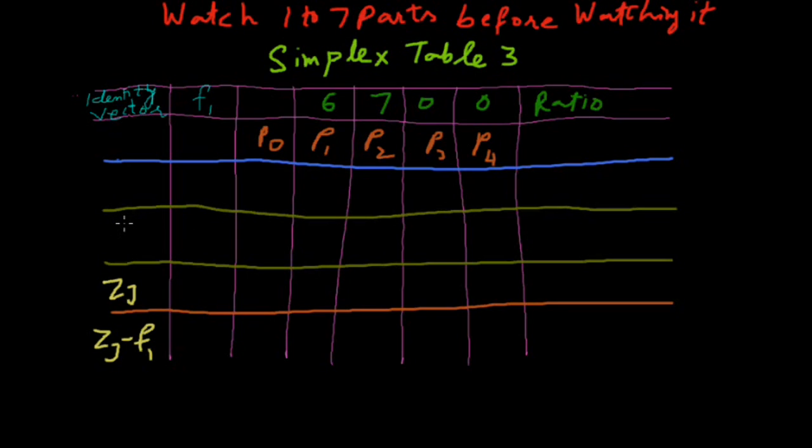Right here, P1 and its value is 6 as the objective function. And P2 will be the same because this is not our corresponding column in simplex table 2, so its value will be 7.